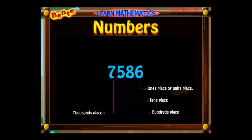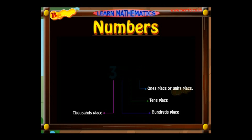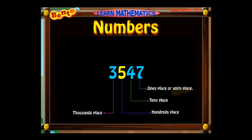The number three thousand five hundred and forty-seven has the value 7 in its ones place, 4 in its tens place, 5 in its hundreds place, and 3 in its thousands place. It tells us the number has three thousands, five hundreds, four tens, and seven ones, so it is read as three thousand five hundred and forty-seven.